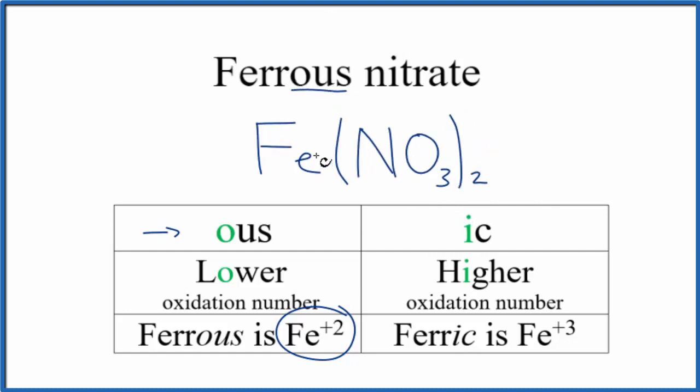formula for ferrous nitrate is Fe(NO₃)₂. We could also call this iron 2 nitrate because we have the +2 charge on the iron atom. This is Dr. B with the formula for ferrous nitrate, Fe(NO₃)₂. Thanks for watching.